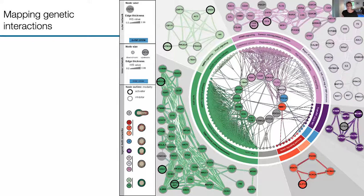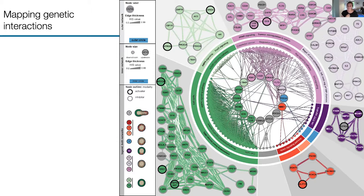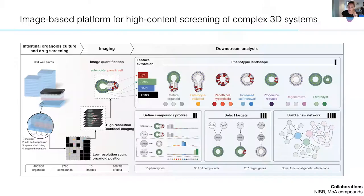We can classify organoids and for every compound use a vector on the abundance of different phenotypes. This allowed us from a single screen to create the first map of genetic interactions. Normally inferring genetic interaction screens requires double knockouts, commonly done in yeast. Here, using this phenotypic landscape, we can create a hierarchical interaction map — you can see beta-catenin and mTOR as key regulators. The most interesting phenotype for us was the regenerative phenotype — compounds that perturb organoid development and enrich in a YAP-positive state.